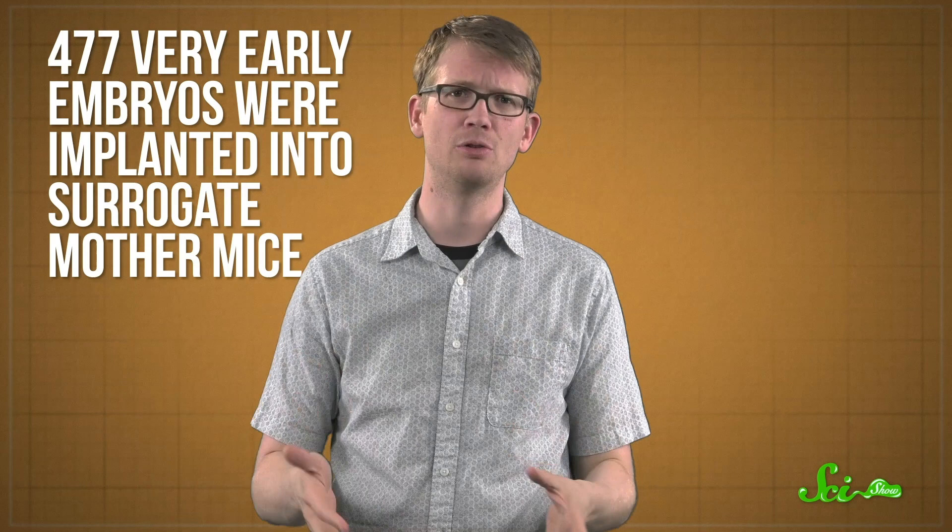But eventually, 477 very early embryos were implanted into surrogate mother mice. This test led to 12 live births, but they weren't very healthy. Only two lived for 48 hours afterwards, and they still died before becoming adults. That's not a great success rate, so might not sound very promising. But the researchers still broke new ground and produced the first living bipaternal offspring. So not nothing.